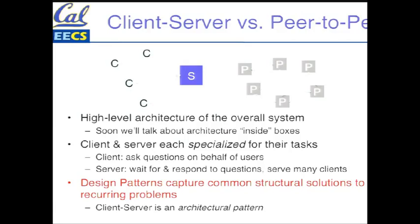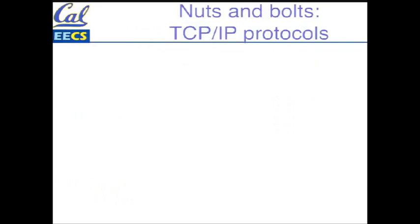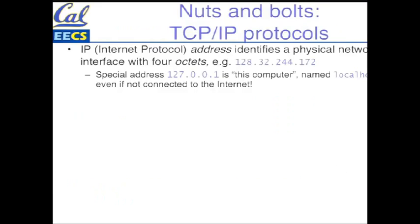Client-server is the first of many design patterns we'll see. A design pattern can be applied at many different levels of abstraction — basically they're ways to capture common structural solutions to recurring problems. You've got a thing with a bunch of information that can answer questions, you've got a lot of people that want to ask questions, and regardless of implementation, you can talk about that as a client-server system. Now, what about the nuts and bolts — how do things actually communicate with each other?